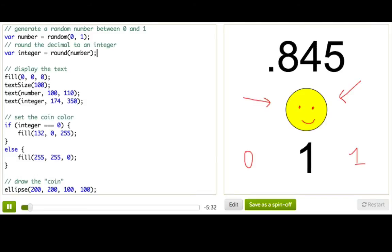And here's the code where we did that. So we said if integer is equal to 0, set the fill color to be purple, otherwise set it to yellow. And then we draw the coin down here.